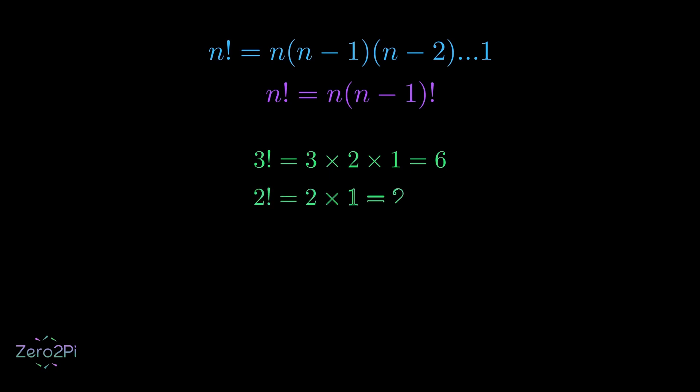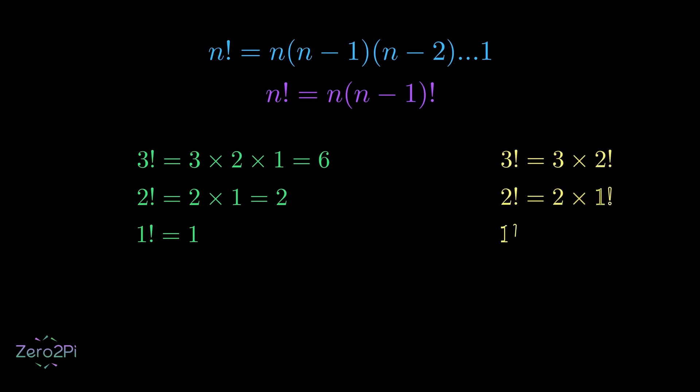Similarly, the factorial of 2 will be 2 times 1 which is 2 and the factorial of 1 is, of course, 1. Interestingly, we can also rewrite these formulas in their respective recursive forms.